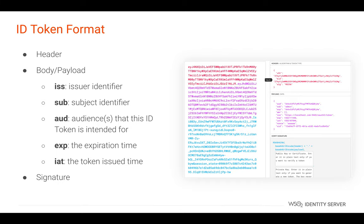'iss' or issuer indicates the token issuer or the identity provider. 'sub' or the subject identifier represents the user who attempted to access the application. 'aud' or the audience represents the audiences interested in the identity token. 'exp' or expiry indicates the token expiry time. 'iat' or issued-at time defines the time at which the token was issued. Apart from these attributes, the token can contain other user information such as user claims. The signature is used to preserve the integrity of the JWT. The application should have the public key and information about the authorization server, based on which it can validate the signature.